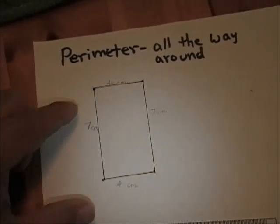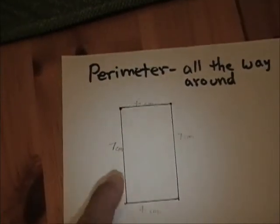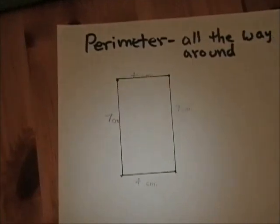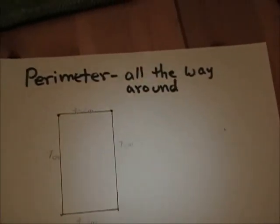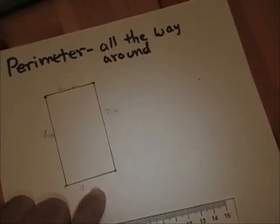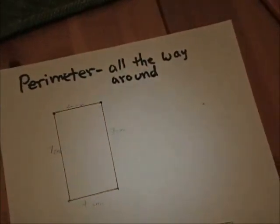A lot of times, when given a figure, they will only put measurements on here and on here, but they will not give you the other two measurements. You need to know the perimeter means all the way around. That means that you have to put the measurements all the way around before you add.